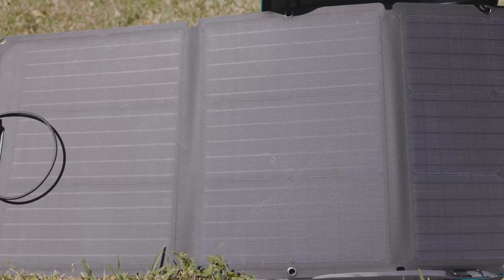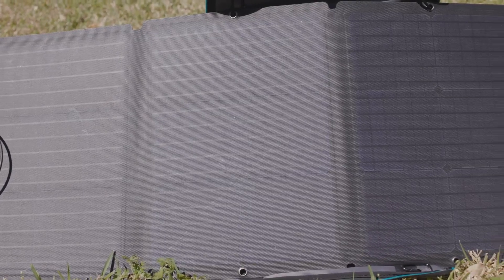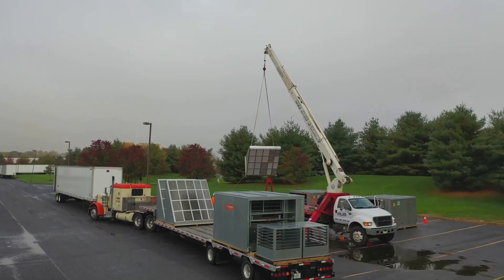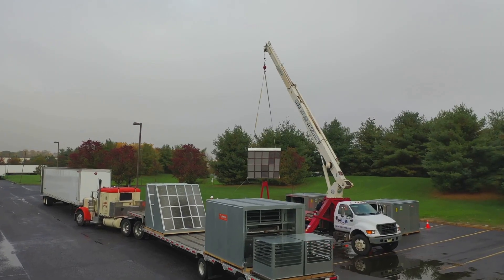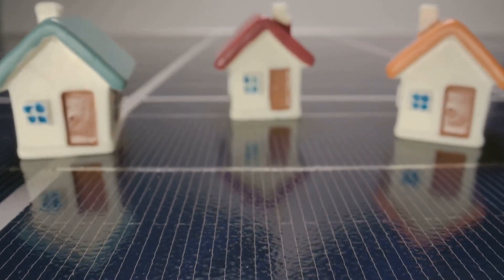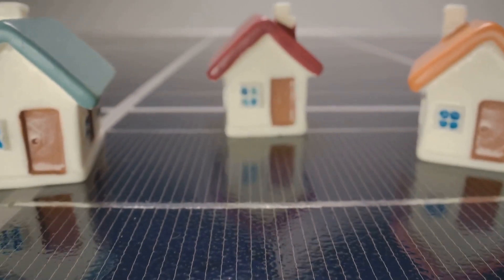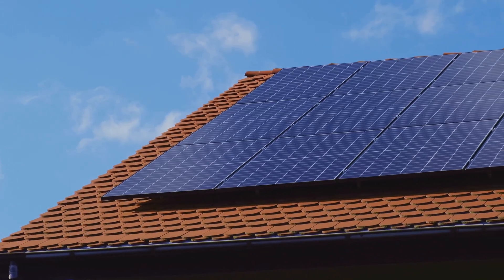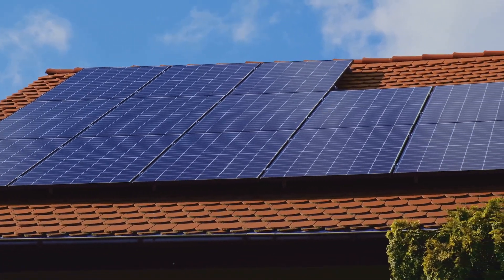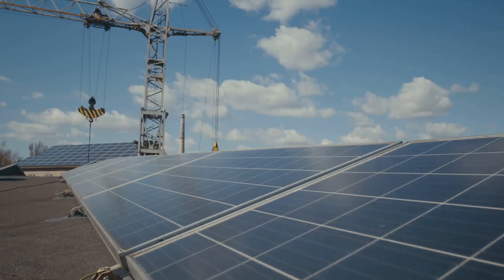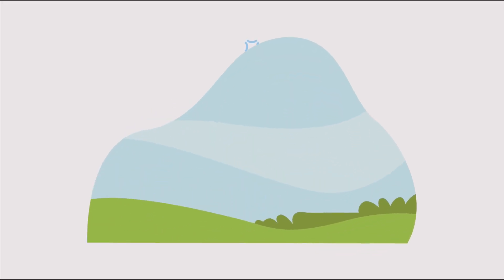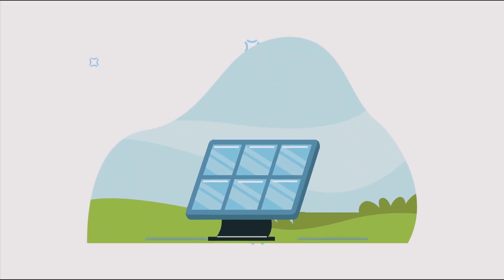Solar air conditioning systems offer numerous benefits, making them an attractive alternative to traditional air conditioning systems. One of the most significant advantages is their environmental friendliness. By utilizing solar energy, these systems significantly reduce reliance on fossil fuels, which are a major contributor to greenhouse gas emissions.